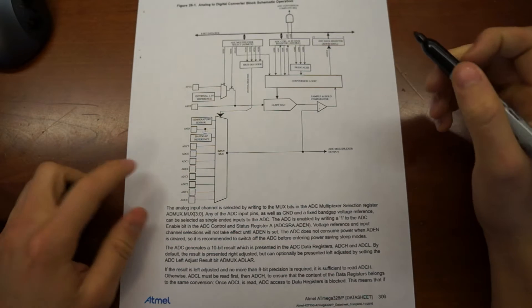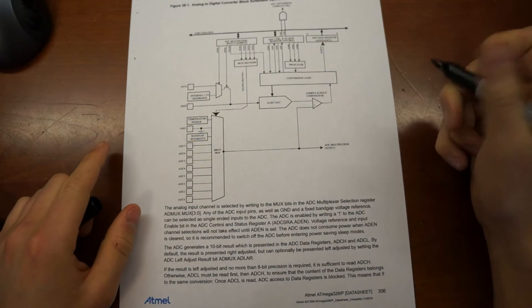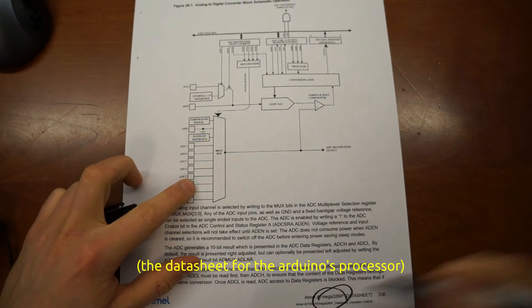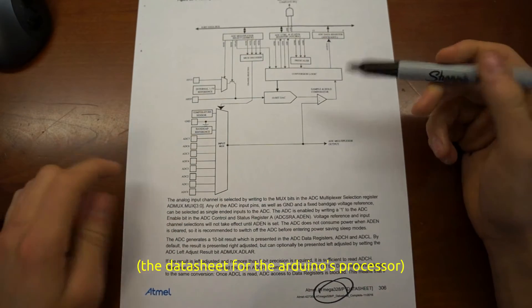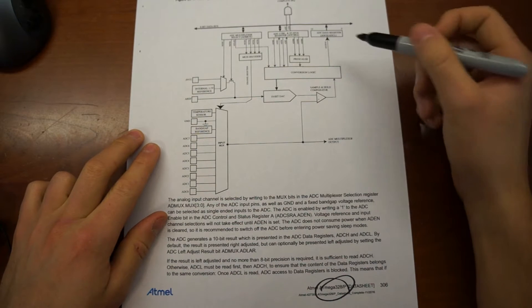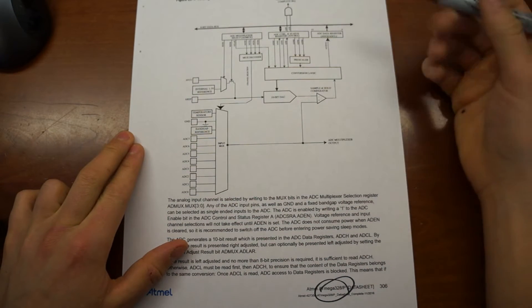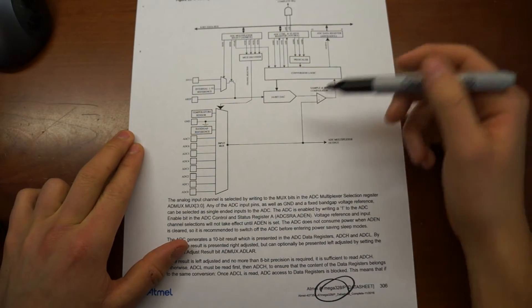Yeah. So here's a print off from the ATmega 328 data sheet. And this is the ADC section where they use successive approximation, which is, I guess, the reason we were talking about it.